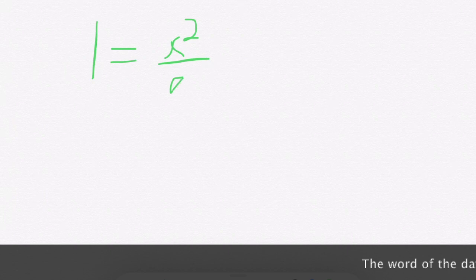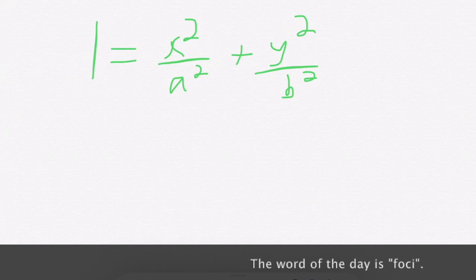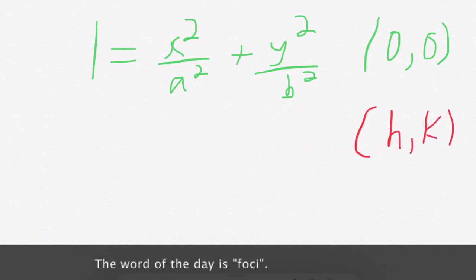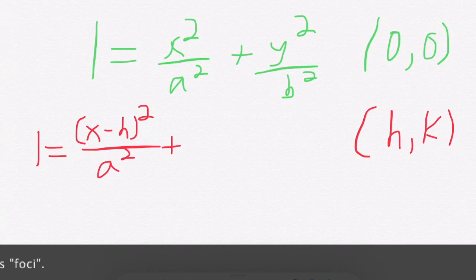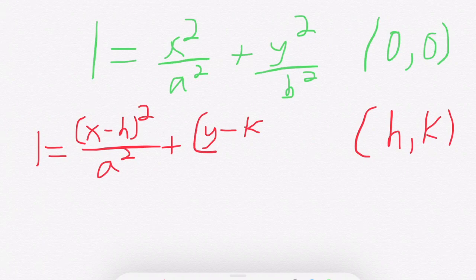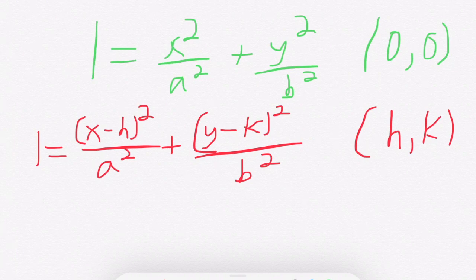Remember, 1 equals x squared over a squared plus y squared over b squared only works if the center is at 0, 0. If I instead want the center to be at h, k, I need to use my understanding of transformations to shift accordingly by an h and k. So this would be an equation for an ellipse.